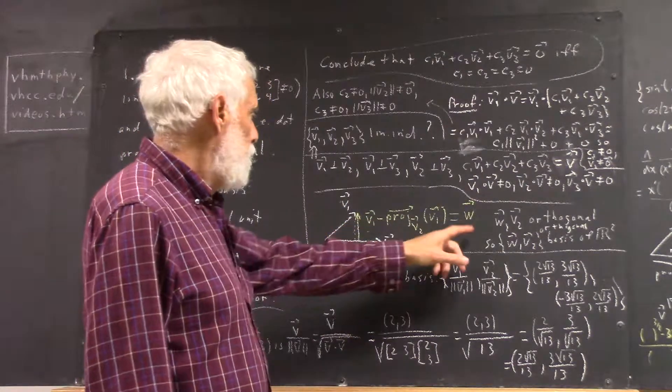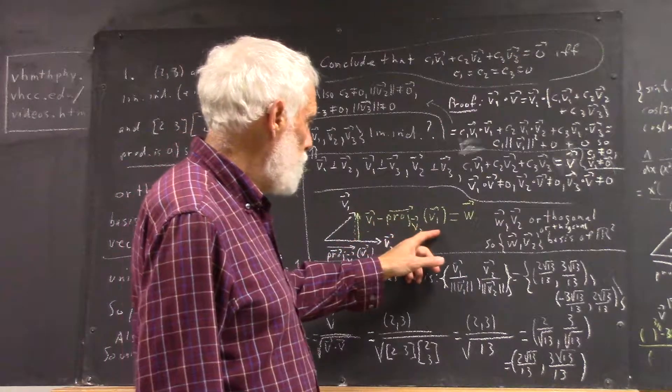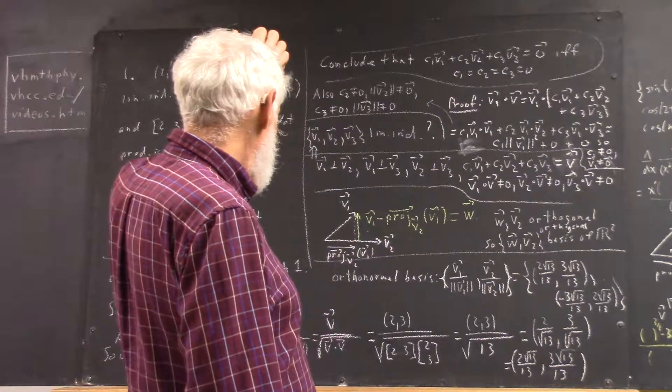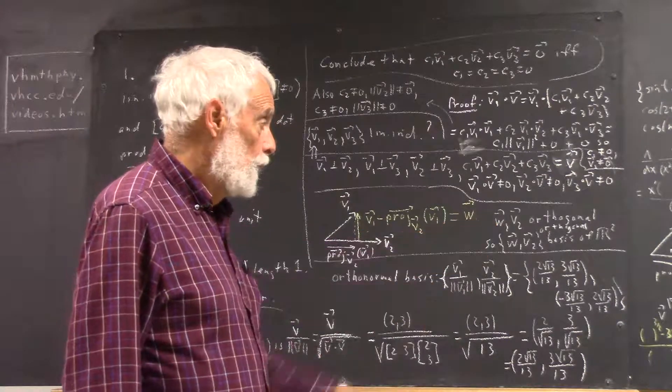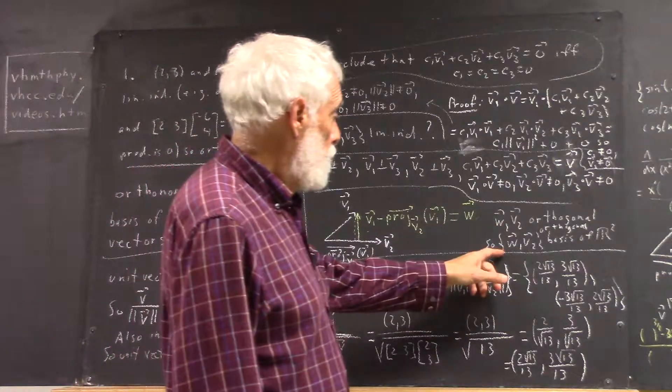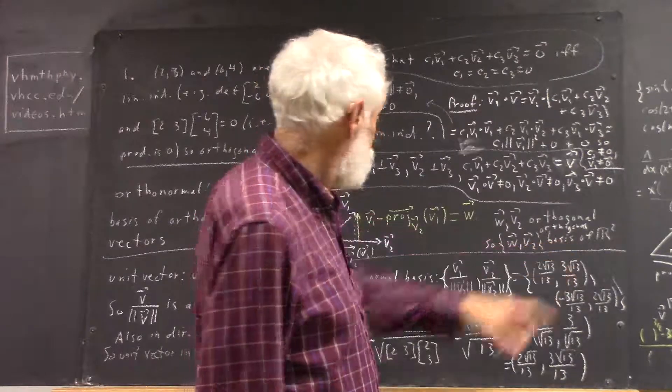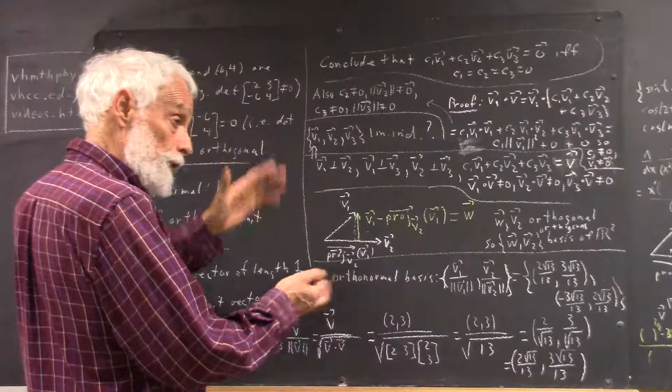Okay, so, if we define W to be the V1 minus the projection vector, then it's going to turn out that W and V2 are orthogonal. So that W, V2 would be a basis of R2, if these aren't vectors in R2. Not necessarily these vectors, any vectors in R2.